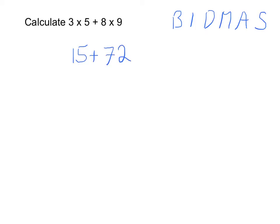We can then work through BIDMAS again. We now have an addition. So that's the next step we can do. 15 plus 72 is equal to 87. And that is our final answer.